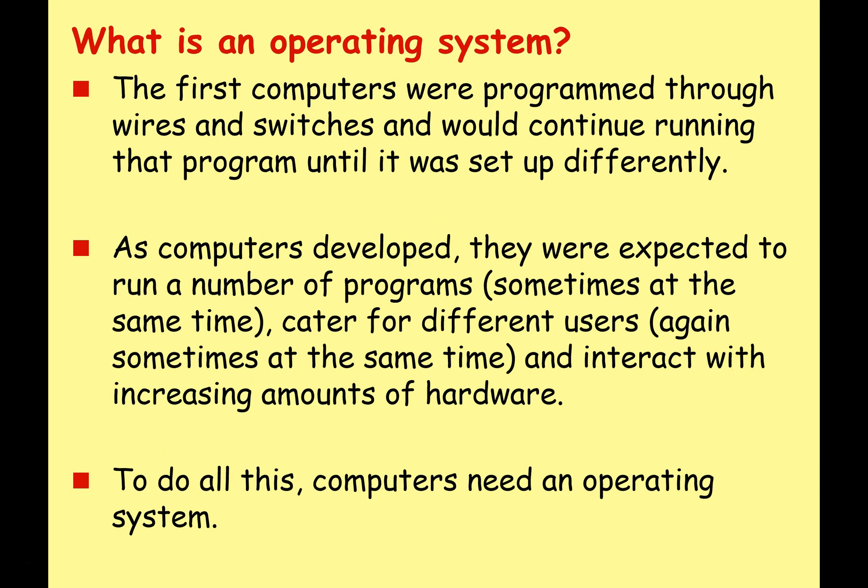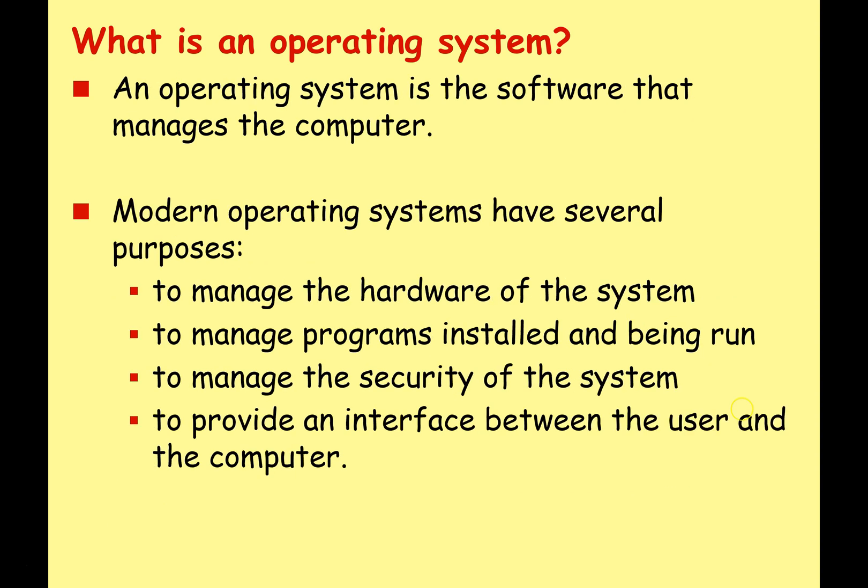So key question: what is an operating system? Let's look at a little historical context. The first computers were programmed through wires and switches and would continue running a program until those wires and switches were set up differently. As computers developed, they were expected to run a number of programs, sometimes at the same time, cater for different users who could be using the computer at the same time, and interact with an increasingly large amount of different hardware. To do this, computers needed an operating system.